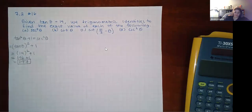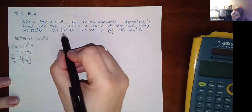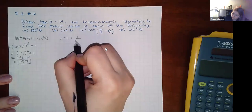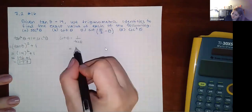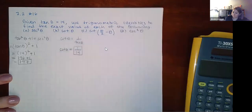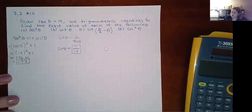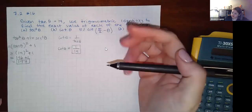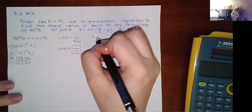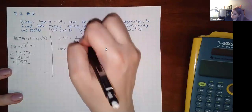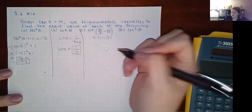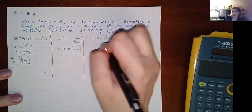For part (b): cotangent is the reciprocal of tangent, so cotangent θ = 1/14. Also, tangent and cotangent are co-functions, so cotangent of the complementary angle equals tangent of theta, which is 14.